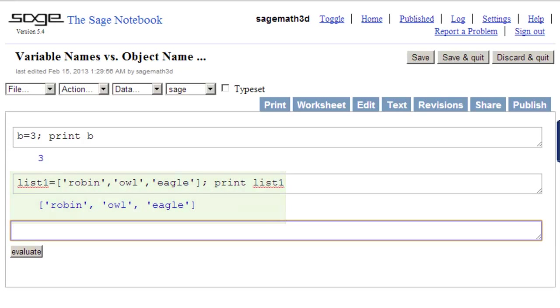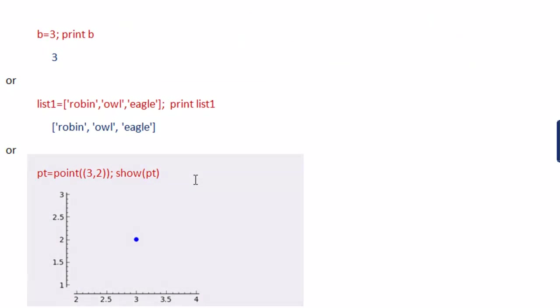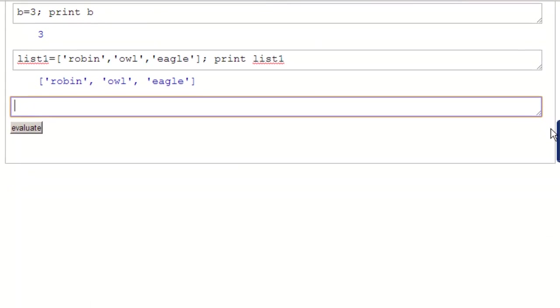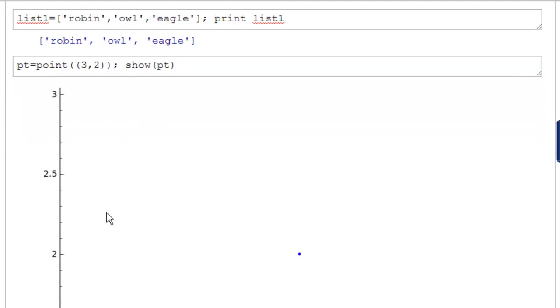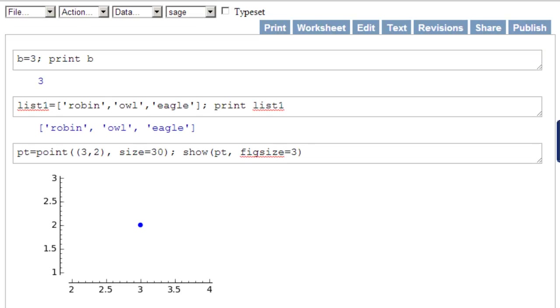And here we are in the next code field. Control V. And hit evaluate. There is our list: Robin, Owl, and Eagle. Here is our last object name, PT. It's a graphics object. Point, and we'll just copy this. Although in the picture below that you see there, I have made the point bigger and the graph smaller. Control C. Move down here a little bit so we have space. And control V. And evaluate. And you can see that there's the point and the graph. So we're going to add the two conditions we said and get a properly sized figure.